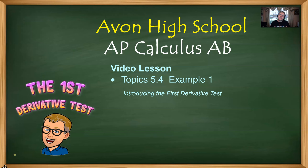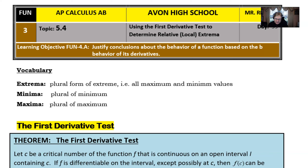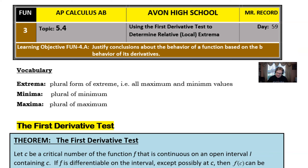You've been doing most of the components of this test already when you went through your 5.3 lesson. We're just going to formalize it a little bit more and do one extra thing at the end, and that takes care of everything about 5.4. First, I want to make sure you're very clear on some vocabulary because students often get confused about the word 'extrema,' which is the plural of 'extreme' and means all of the maximum and minimum values combined.